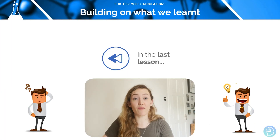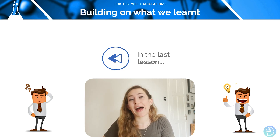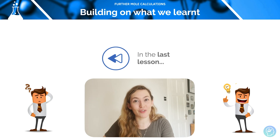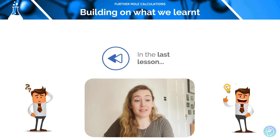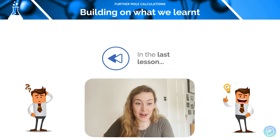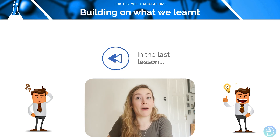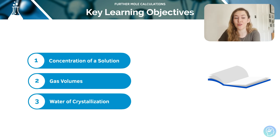Hi and welcome to this tutorial on further moles calculations. In the last tutorial I introduced the mole and talked about it in relation to Avogadro's constant. We now know how to perform basic mass calculations using Avogadro's constant, mass of a substance, the relative molecular mass, and the amount of substance in moles. In this tutorial we're going to look at concentration of a solution, gas volumes, and water of crystallisation.